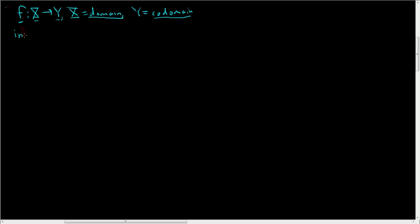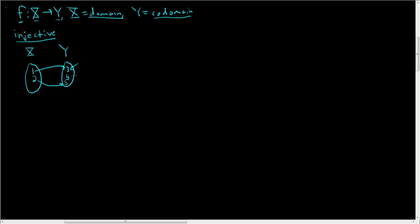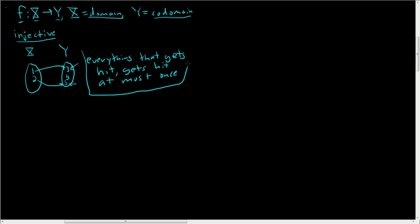Let's start by looking at injective functions. We'll draw a picture: capital X has 1 and 2, capital Y has 3, 4, and 5. Our function sends 1 to 3, and sends 2 to 5. This would be an injection, because everything that gets hit — 3 gets hit, and 5 gets hit — gets hit at most once. That's what injective means: everything that actually gets hit in the codomain does not get hit more than one time.